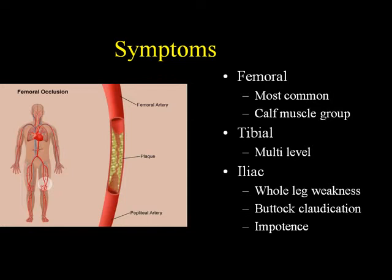Always remember: if patients complain of buttock or thigh claudication, the blockage is one level above — that means iliac or aorto-occlusive disease. The most common complaint you will hear is leg cramps or charley horses in the calf muscles, which corresponds to superficial femoral artery disease between the groin and the knee — usually SFA stenosis or occlusion. If patients start complaining of foot pain, it is usually tibial disease, and by then they typically have multilevel disease and are at the level of rest pain.